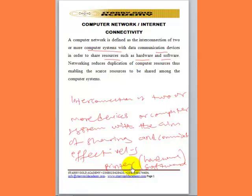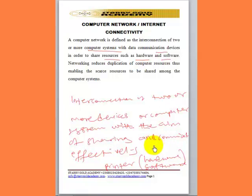Each user, when it is time to print, will send their job to the printer, and the printer will accept it and print it. The only condition is that the computer where the printer is installed must be on at all times, because if it is off and you send data to be printed, it will give an error that the printer is not found. That is why it is advisable to install the printer on the network server, because the network server must always be on.